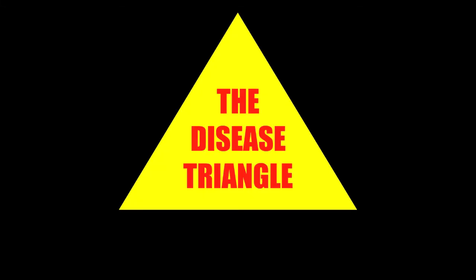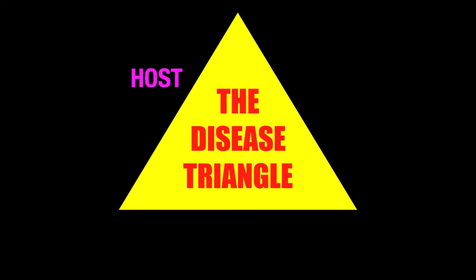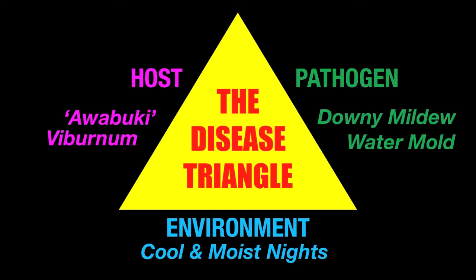What causes a disease? Classic plant pathology teaches us the disease triangle. First, we have the susceptible host — Awabuki viburnum. Second, a very aggressive pathogen — downy mildew. And then just the right weather conditions. When these three factors come together just right, you will have downy mildew blight on your Awabuki hedge.